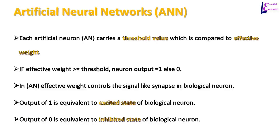In artificial neurons, a threshold value is set which is compared to the effective weight. If the effective weight is greater than the threshold value, the neuron outputs a result of 1; otherwise, the output will be 0. So in an artificial neuron, effective weight and threshold can control signals like a synapse does in a biological neuron. An output of 1 is equivalent to the excited state of a biological neuron, and an output of 0 is equivalent to the inhibited state of a biological neuron.